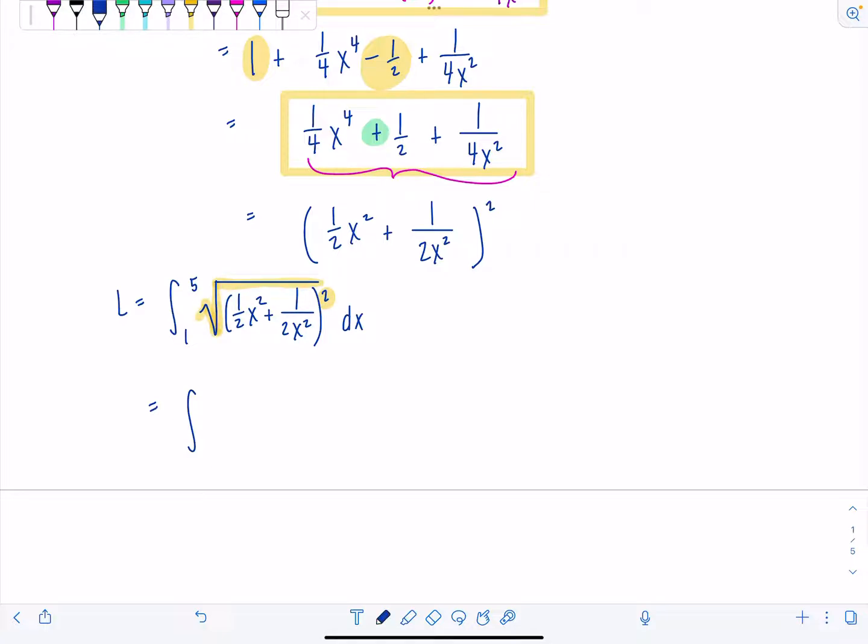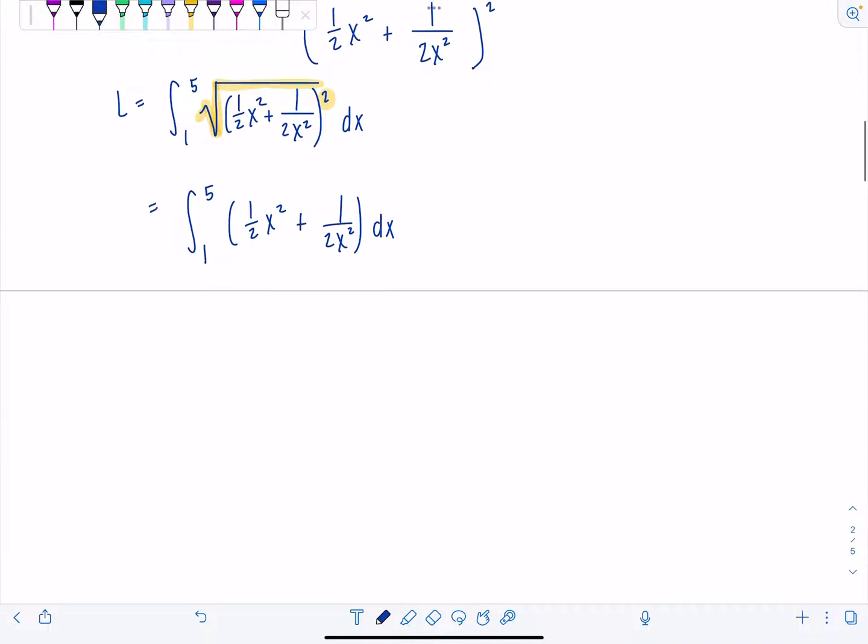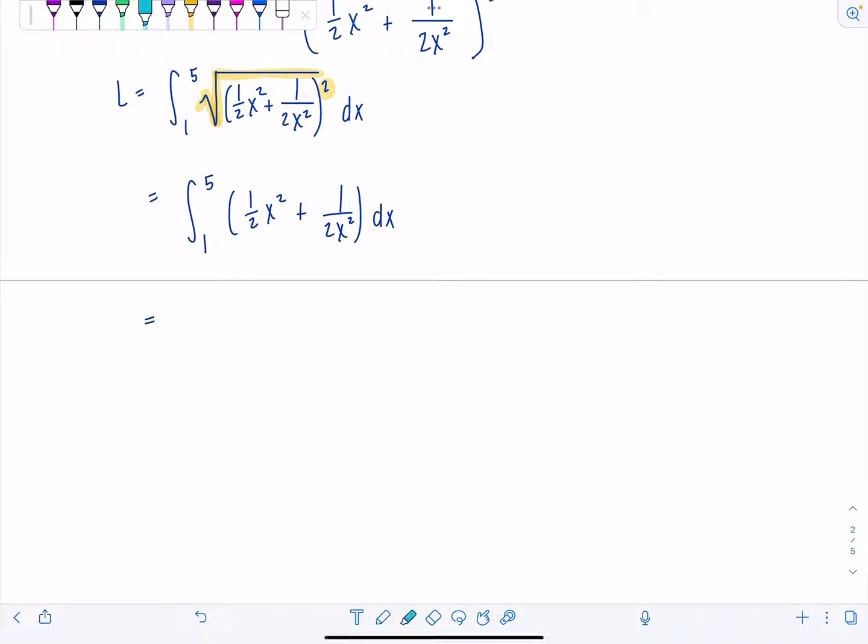And then from here, I can just get rid of the radical sign and cancel out the exponent here. These two undo each other. So we have definite integral from one to five. Technically it's absolute value of everything inside, but on one to five, everything's positive. So I'm not worried. We've got one half x squared plus one over two x squared dx. I'm going to take out a one half. One half definite integral from one to five. And then now I have x squared plus I'm going to write this as x to the negative second.